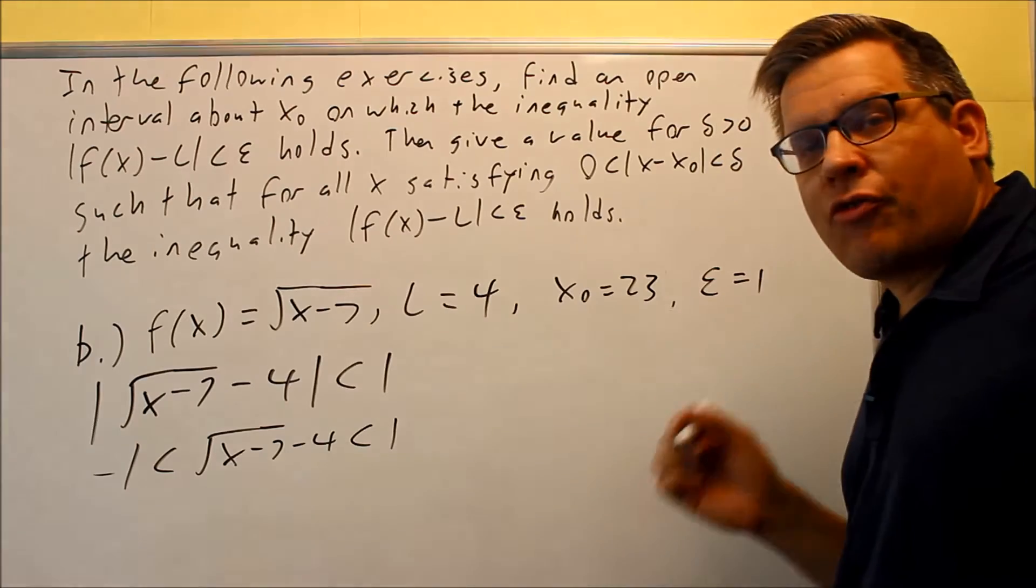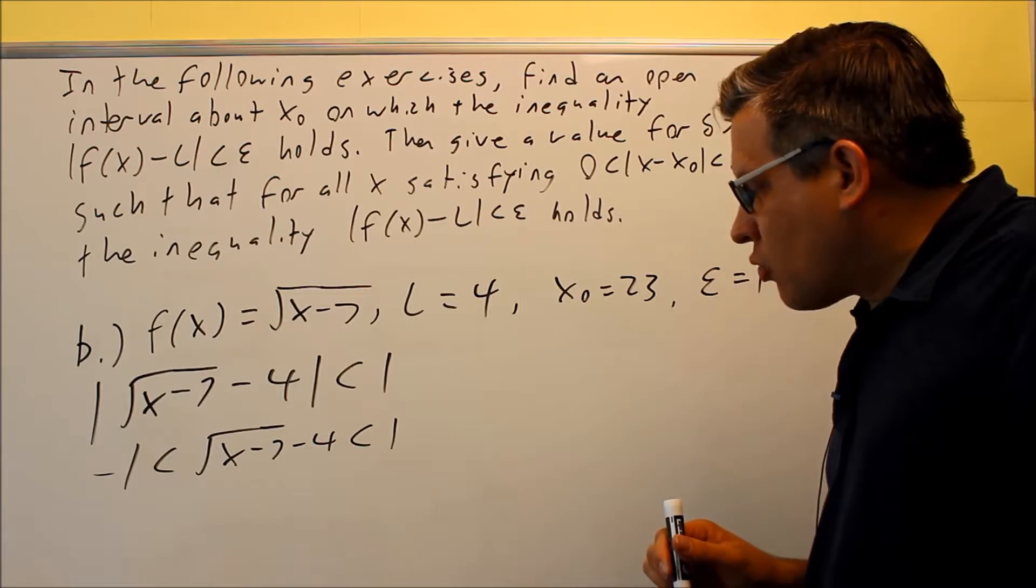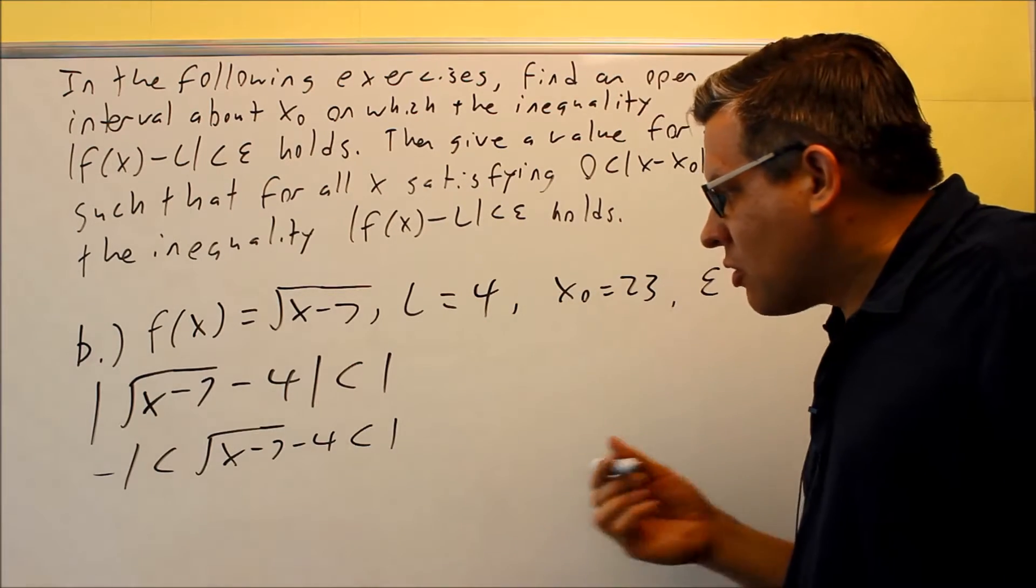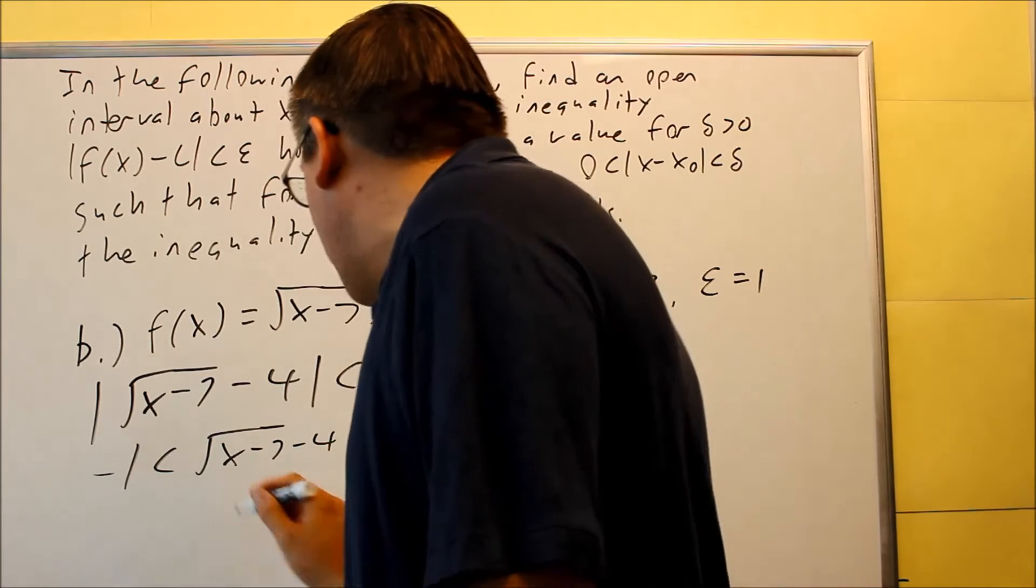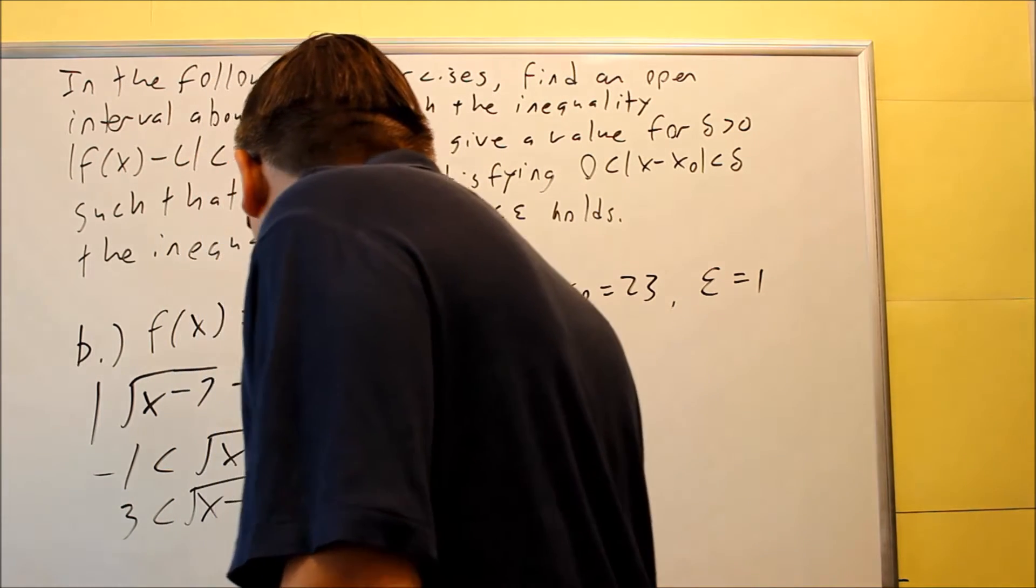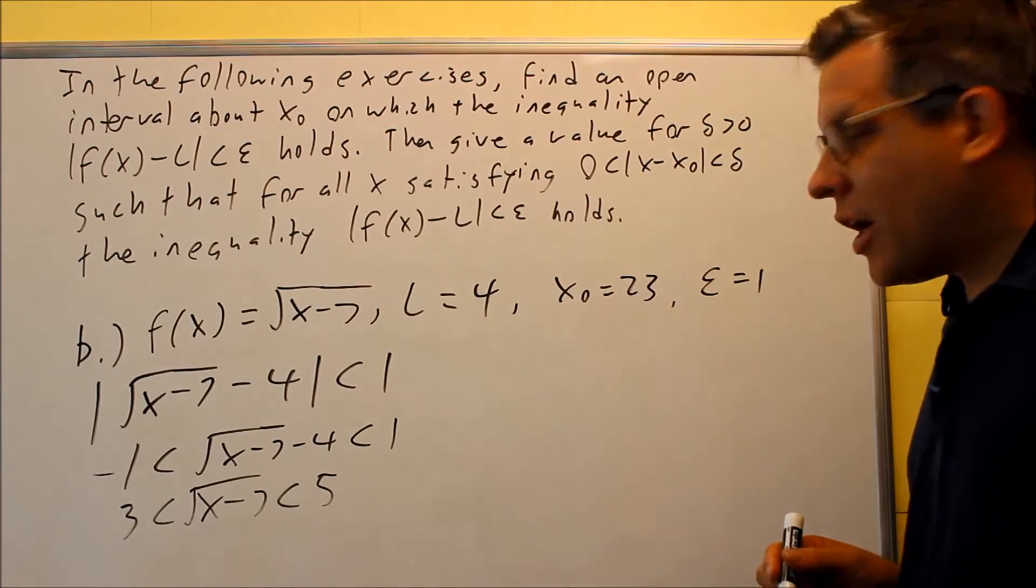Okay, and then we're going to add 4 to all the sides because you want to isolate the square root part because we're going to isolate it so that way we can square both sides. So I'm going to add 4 to all the sides. If I add 4 to all the sides, then I'll get this. So now it would be between 3 and 5.